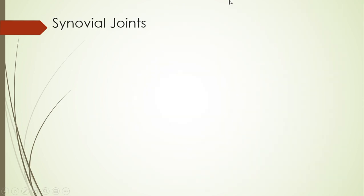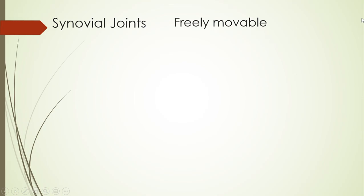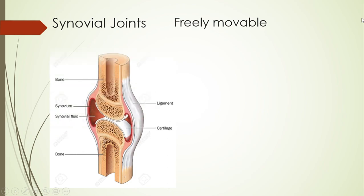Then we get synovial joints. Synovial joints are freely movable — they are described as freely movable joints in that there is a large range of motion occurring with them. There are many synovial joints in your body, and because there are lots of them, we like to categorize them. This is an example of a generic synovial joint.